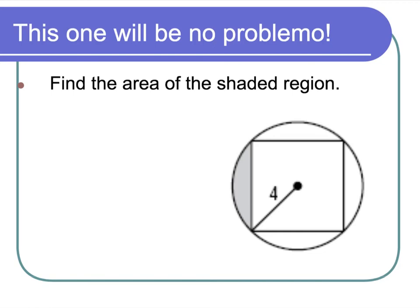This one will be no problemo. Find the area of the shaded region. Again, there are a couple ways of going about this particular one, but let's practice with what we've just learned. I'm going to draw in another radius here of that circle, of that square, as it's referred to. And that makes this guy 4.